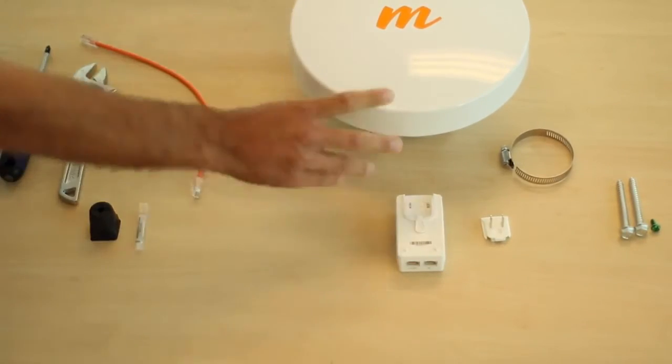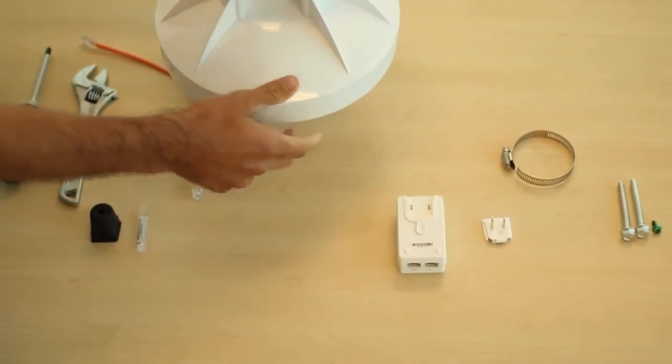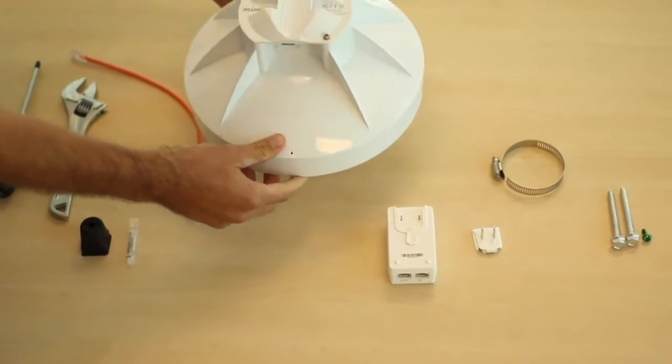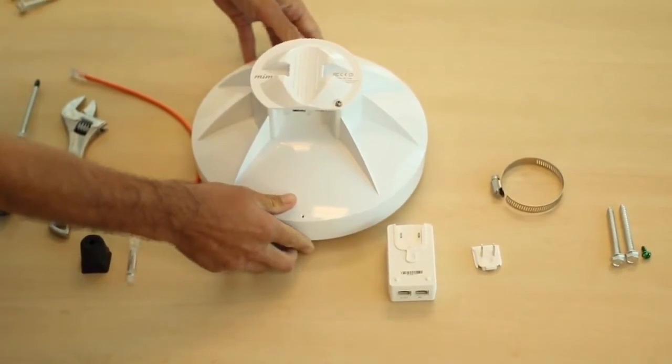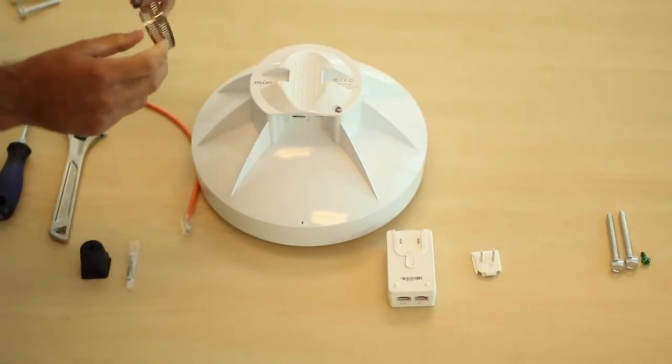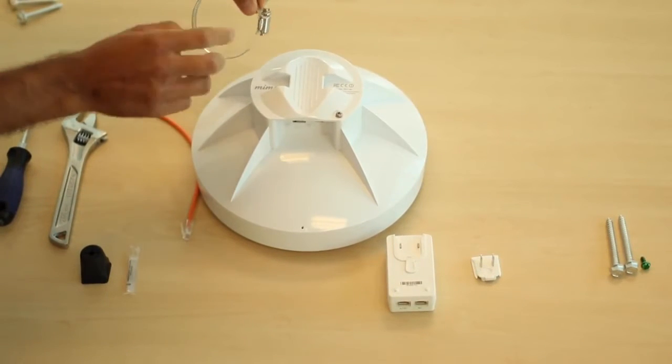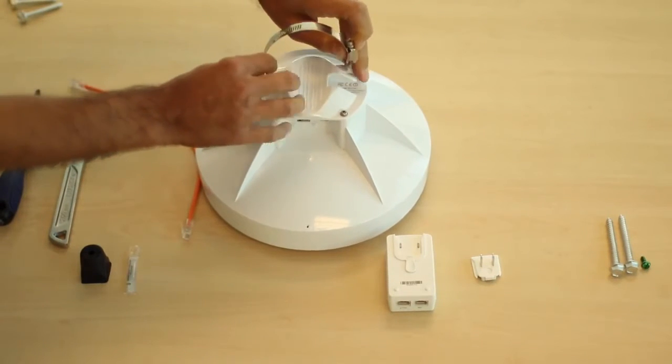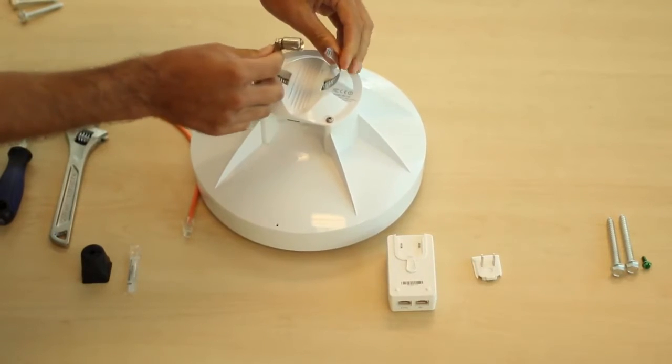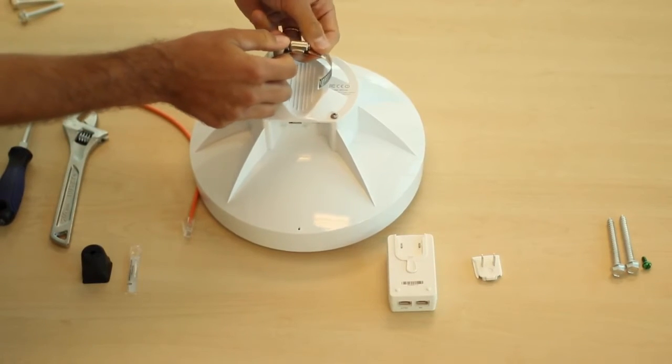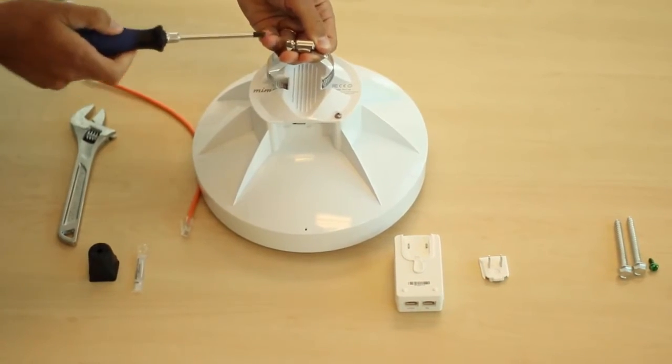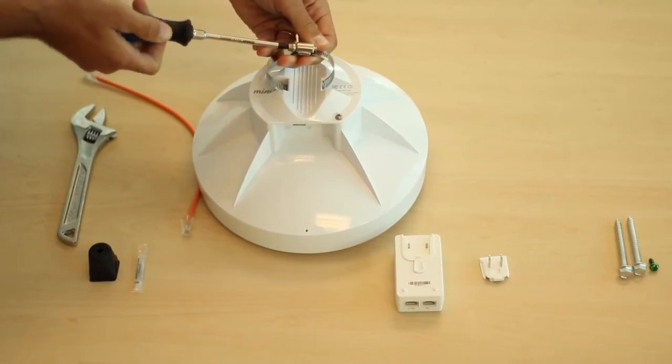Next, prepare the radio to be attached to the mount. On the back of the radio, you can slide the pipe clamp through the slot in preparation for securing the radio to the mount. Use the screwdriver to tighten the clamp such that it will just barely fit over the mount.